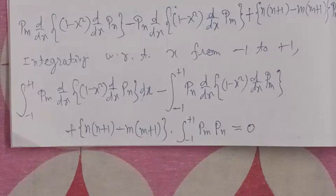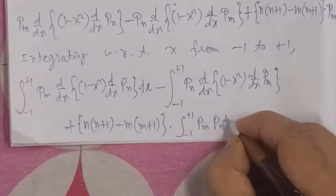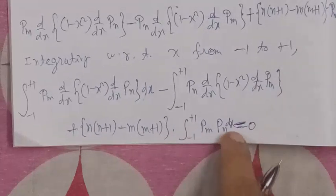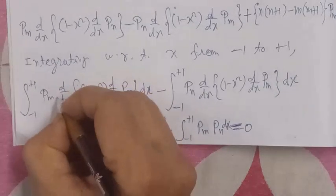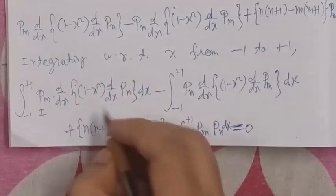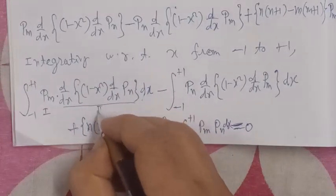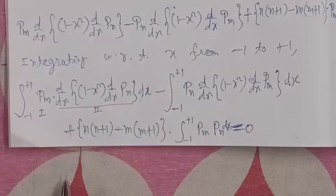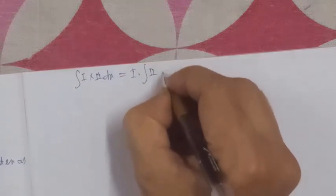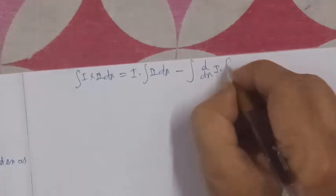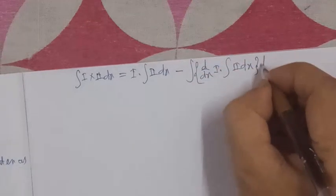To evaluate the integral of a product of two functions, we use integration by parts. The formula states: ∫(u·v) dx = u·∫v dx − ∫[du/dx · ∫v dx] dx. Here the first function is taken as it is, and the second function is integrated.